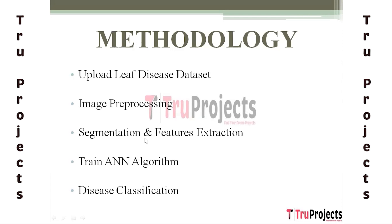The third module is Segmentation and Feature Extraction. This module involves employing the K-means clustering algorithm to segment the infected portions of leaf images, effectively isolating the areas of interest. Subsequently, Principal Component Analysis (PCA) will be applied to distill crucial features from these images, reducing dimensionality while retaining relevant information vital for disease differentiation.